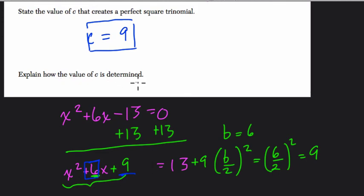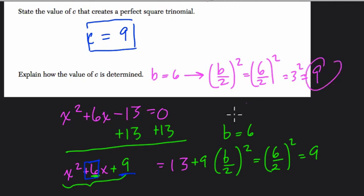Explain how the value of c is determined. Oh, well, you can say that b equals 6. Then you take b divided by 2 and square it, and that's 6 divided by 2 squared, which equals 3 squared, which equals 9. That's how the value is obtained.